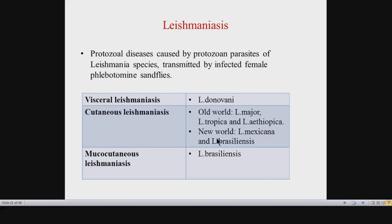The species causing cutaneous Leishmaniasis differ by region. In the Old World — Europe, Asia, and Africa — it is caused by Leishmania major, Leishmania tropica, and Leishmania ethiopica. In the New World, meaning the Americas, cutaneous Leishmaniasis is caused by two main species: Leishmania mexicana and Leishmania brazilensis.